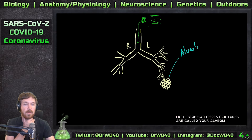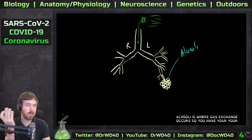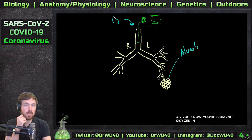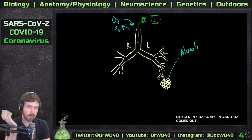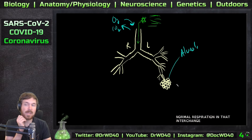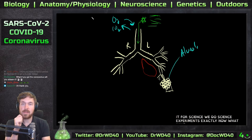These structures are called your alveoli. Your alveoli is where gas exchange occurs. You're constantly breathing in and out - you bring in oxygen, so O2 comes in and CO2 comes out. That's normal respiration and that interchange is at these alveoli.